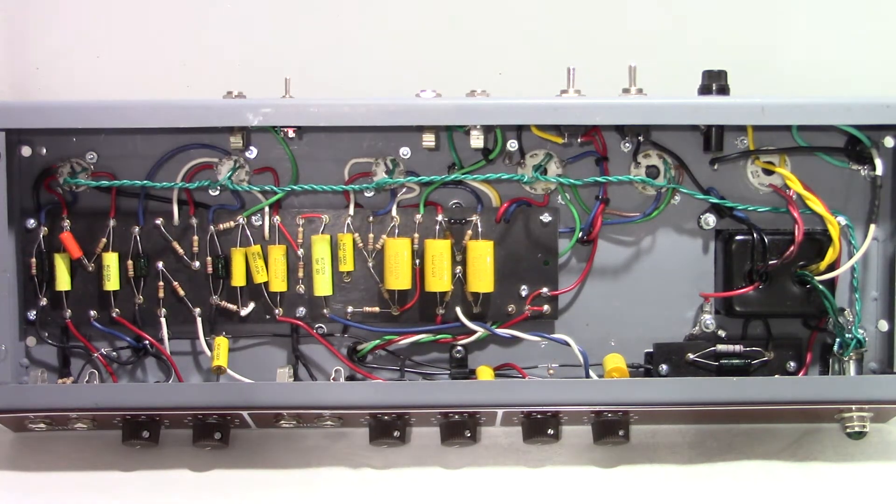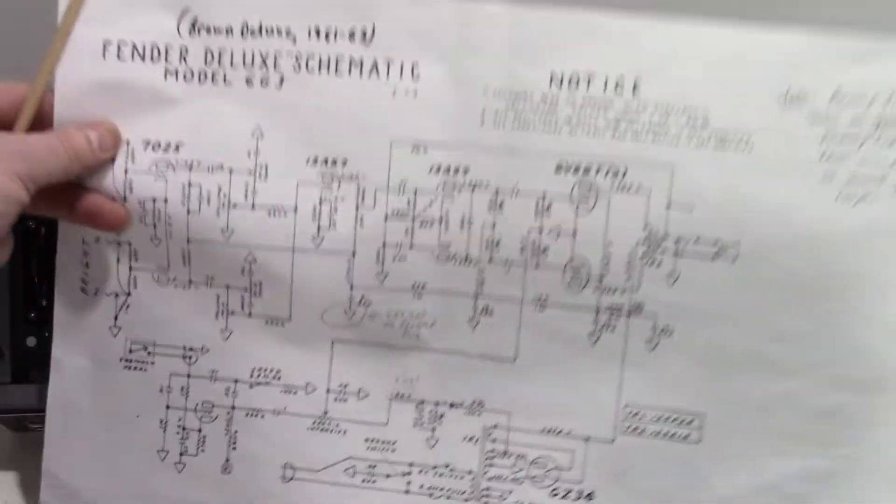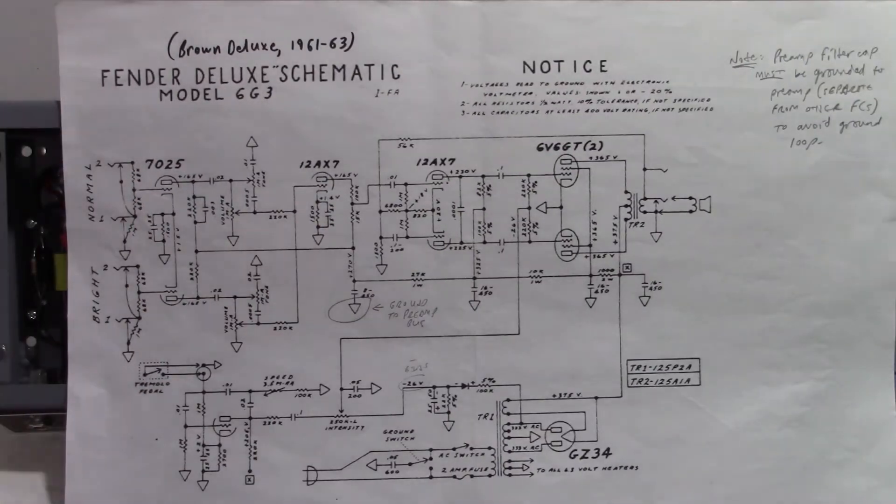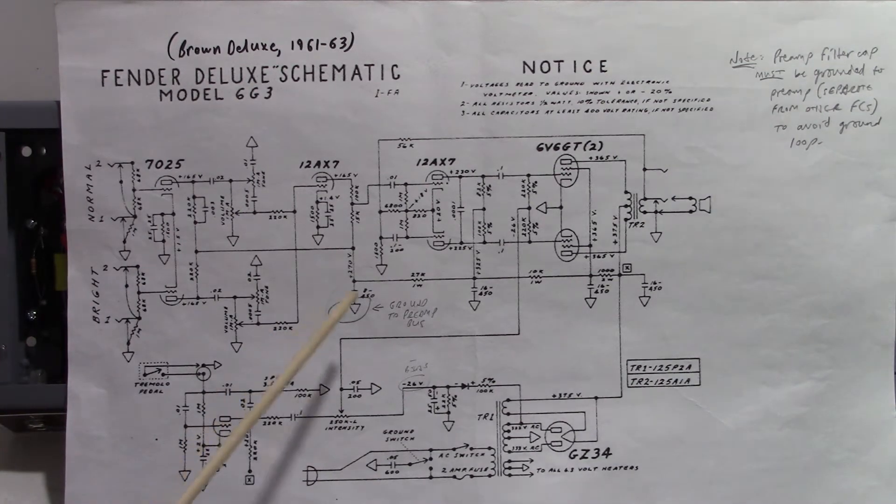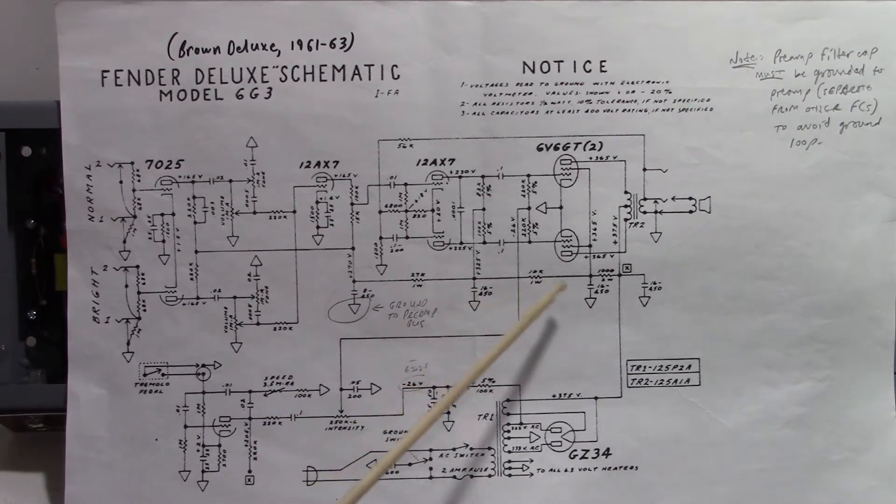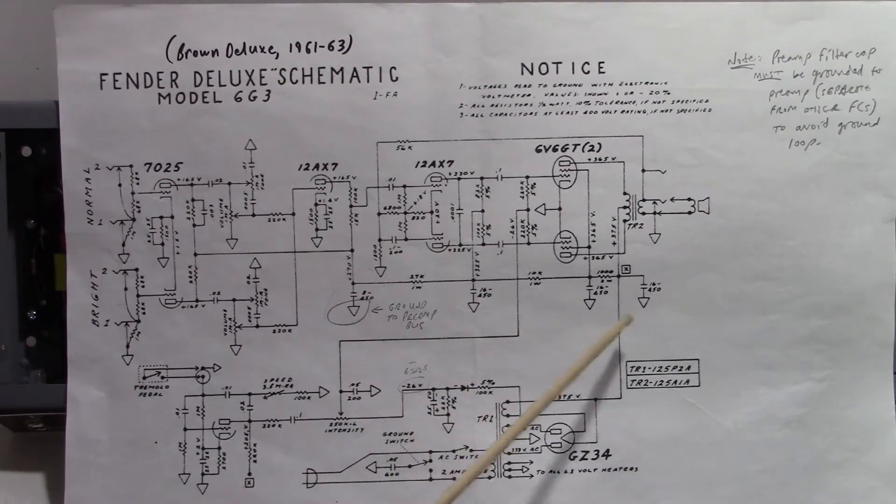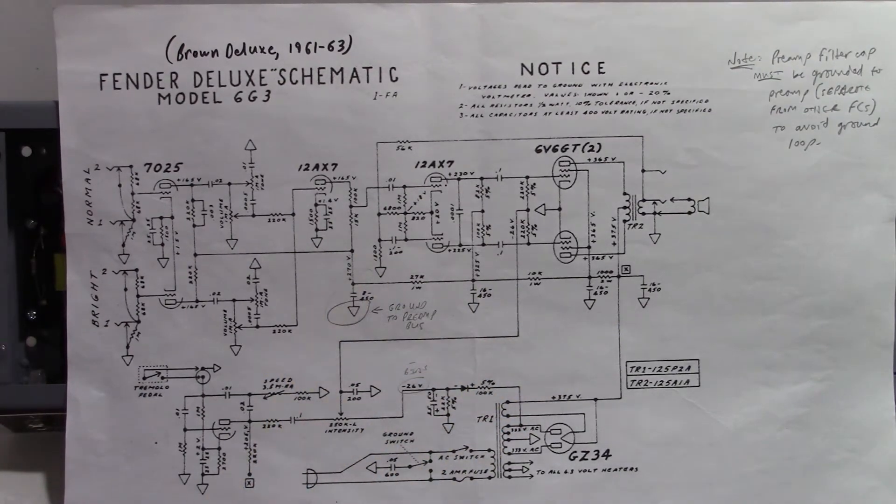When I'm going to build a replica style amp like this, the first thing I do is get the original schematic. There are a few things that I change, the grounding scheme. I use a more modern grounding scheme than the simply sort of random grounding to the chassis style.